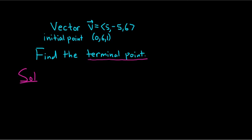So we have our vector v, we have our initial point, and we need the terminal point. So the most important thing is to remember that the vector is going to be equal to the terminal point minus the initial point. So it's always terminal minus initial.